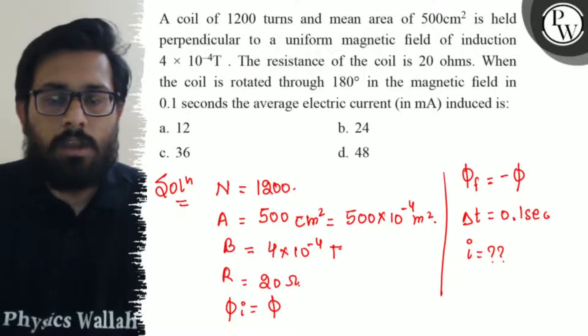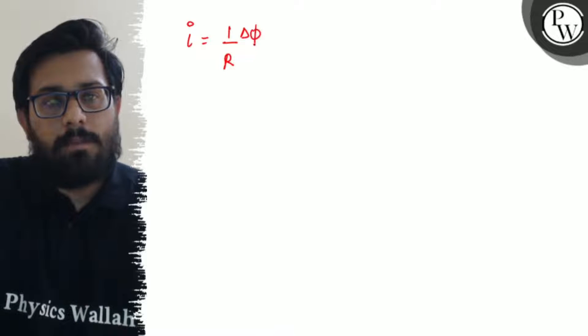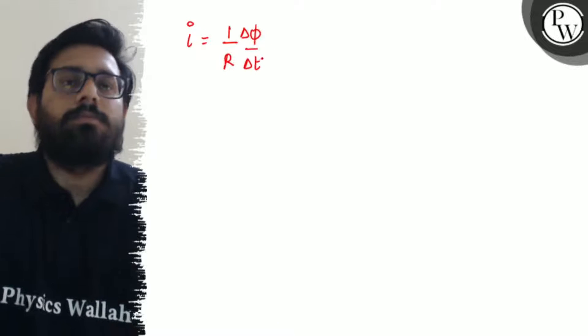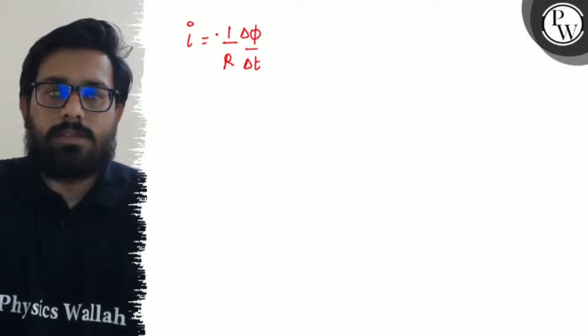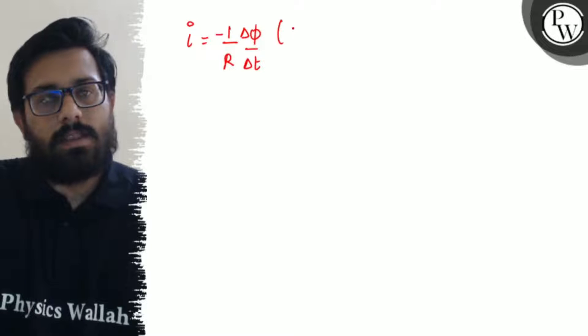So we have the formula for this: the induced current equals 1/R × dφ/dt. And if we use Lenz's law, then the minus sign also comes from Lenz's law.